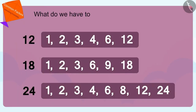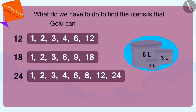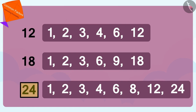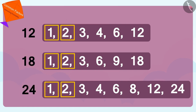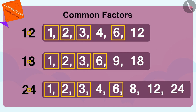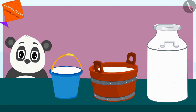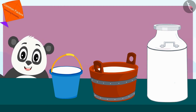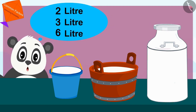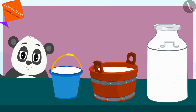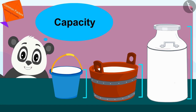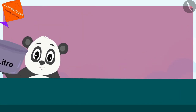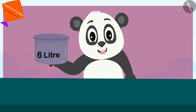What do we have to do to find the utensils that Golu can use to measure milk? Exactly! We need to find common factors of 12, 18 and 24. 1, 2, 3 and 6 are common factors of these numbers. I can easily measure the milk filled in these pots using a pot of 2, 3 or 6 liters. And the largest of these is a capacity of 6 liters. So we can definitely measure the milk filled in these utensils with a 6-liter vessel.